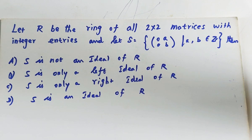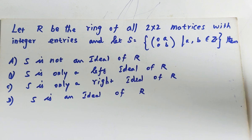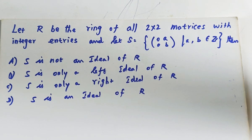So R is the set of all two cross two matrices with integer entries. S is a subset, where each element has first column 0 and second column A, B where A and B are integers. We need to determine whether S is a left ideal, right ideal, ideal, or not an ideal of R.